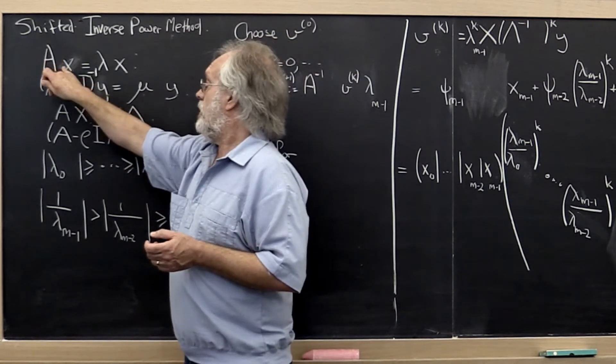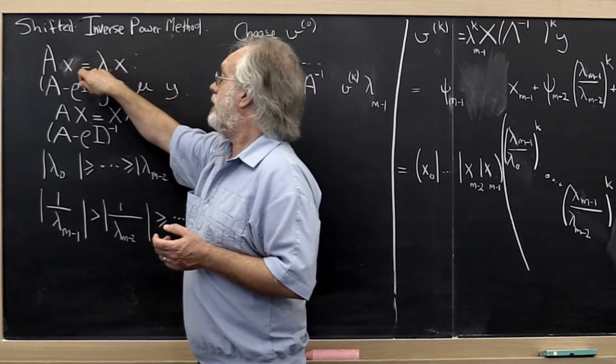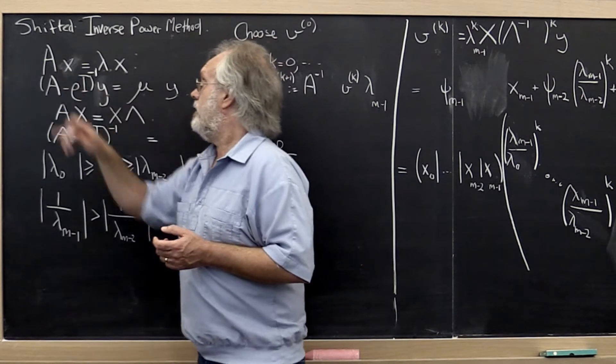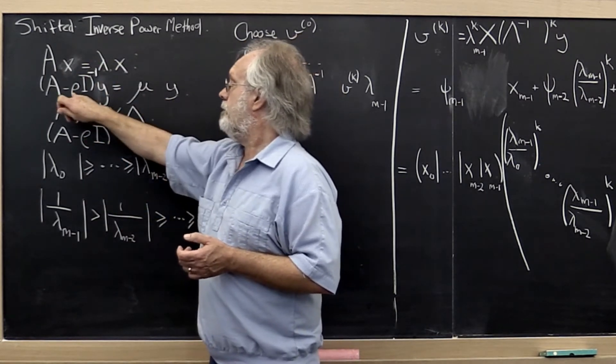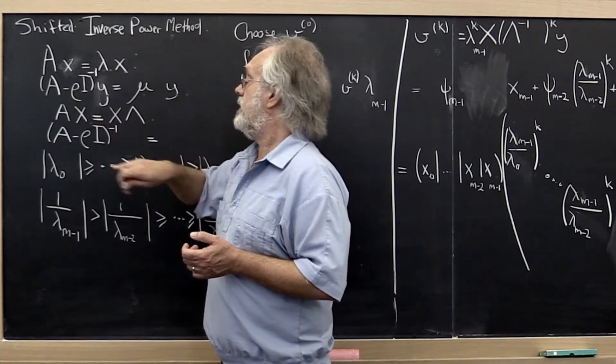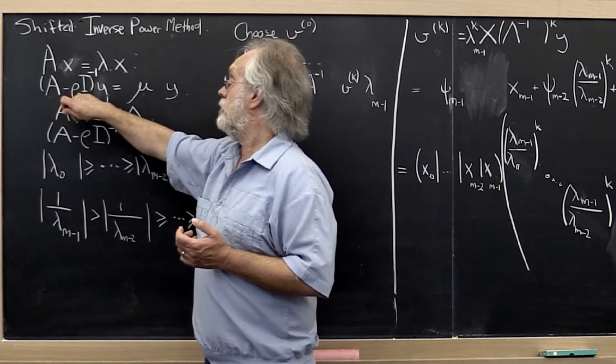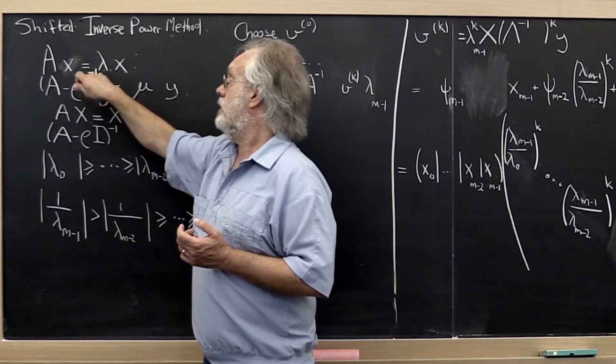If I know that lambda and x are an eigenvalue, an eigenvector of A, can I somehow use that to come up with convenient eigenvalues and eigenvectors of the matrix A minus rho i quantity inverse?